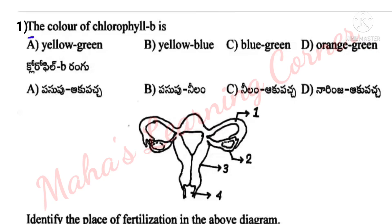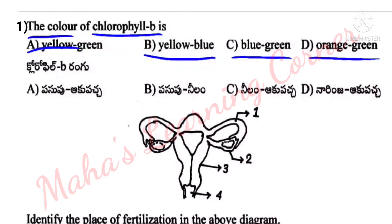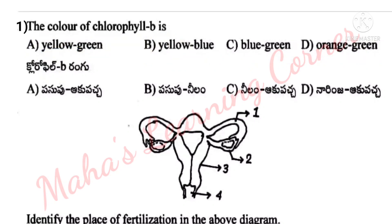First question: The color of chlorophyll B is? Options: A. Yellow Green, B. Yellow Blue, C. Blue Green, D. Orange Green. Correct answer: Option A, Yellow Green is the correct answer.